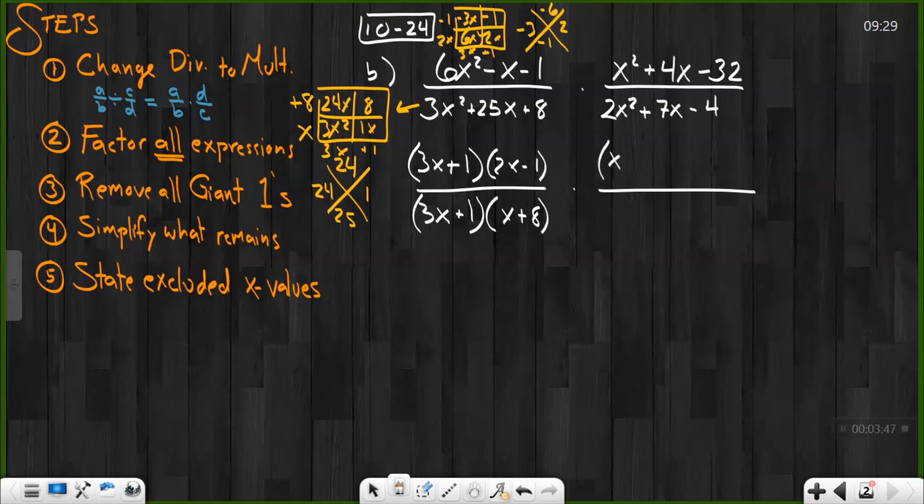And on the other side, oh, thank goodness, we've got just x squared. That means it goes down to just x and x. And all I've got to look at is what multiplies to get negative 32 and adds to get 4. That's going to be a positive 8. And then negative 4.